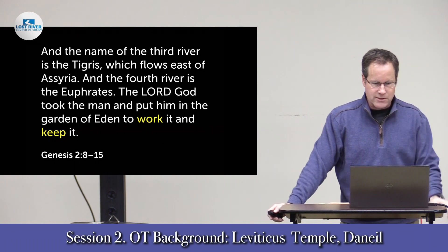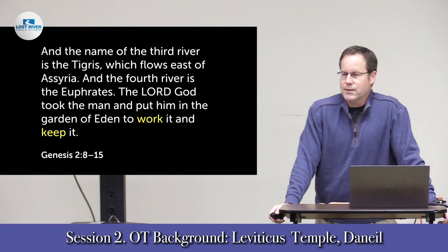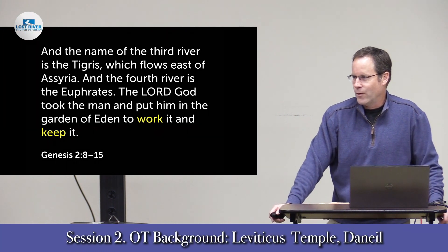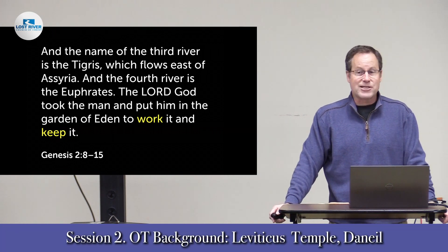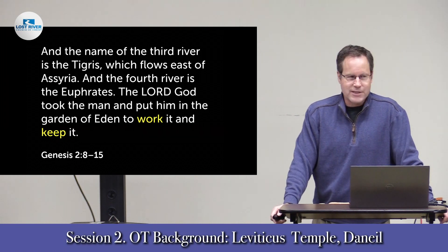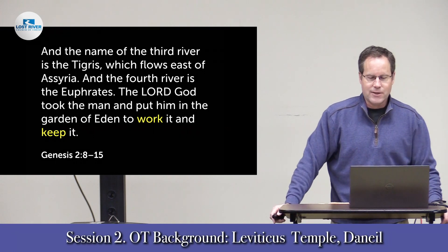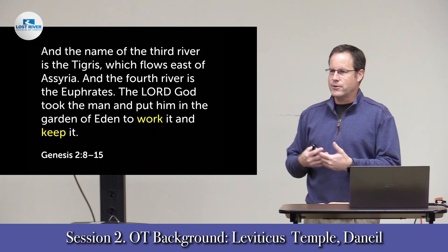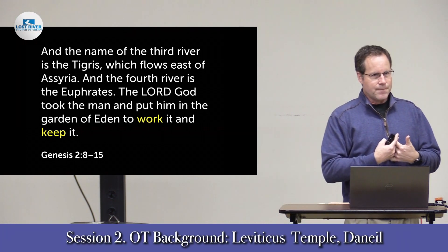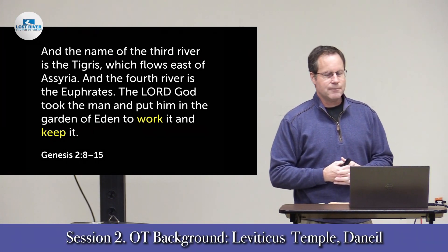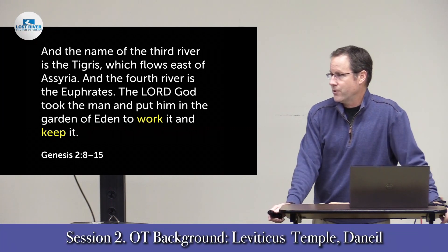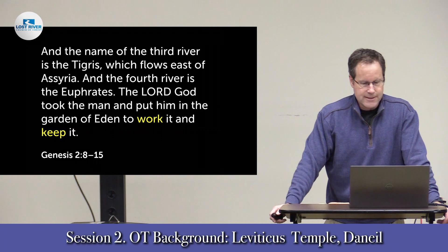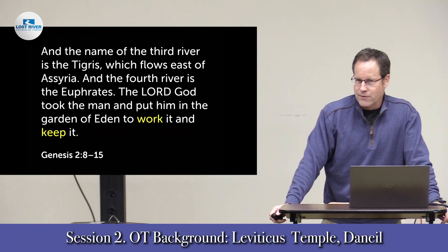After describing the four rivers, it says the Lord God took the man and put him in the garden of Eden to work it and keep it. A lot of people think work is a consequence of the fall, but this tells us work was prior to the fall — it's part of the good of God's creation, not part of the bad. There are aspects of it now that carry the curse, but work in itself is a good thing. God worked six days and we, as his image bearers, do so as well. He put man there not only to work the garden but also to keep it — to defend and protect it — which would imply there might be reason to do so, that something could spoil this good creation.